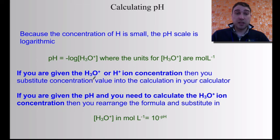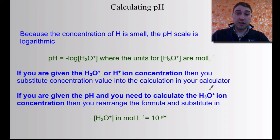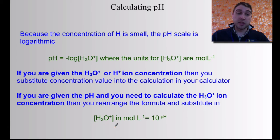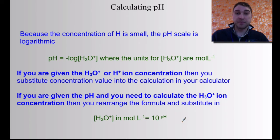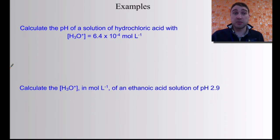If you're given the hydrogen ion or hydronium ion concentration, you can figure out pH using your calculator. If you're given the pH and need to calculate how many hydronium or hydrogen ions are present in the solution, you rearrange the formula: the concentration of hydronium ions in moles per litre equals 10 to the negative pH. This is the anti-log of the log equation.